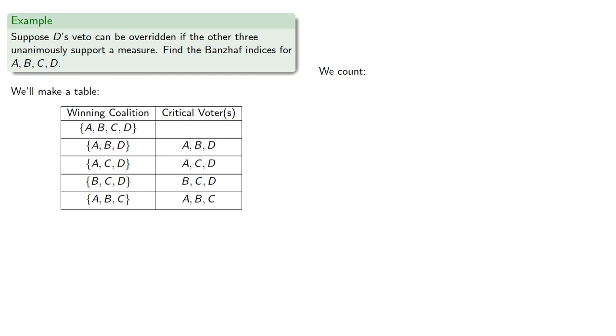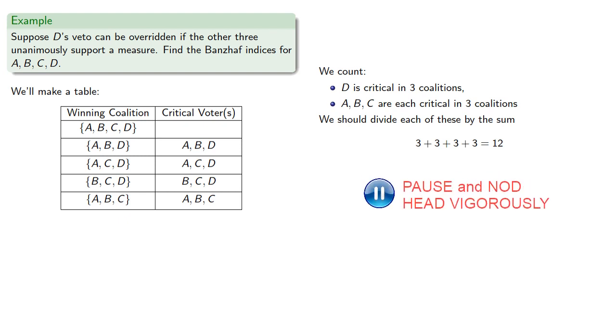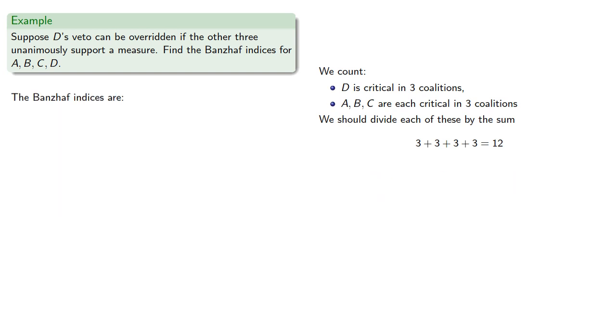And now we count. D is critical in three coalitions. Meanwhile A, B, and C are each critical in three coalitions. So we should divide each of these by the sum, 3 plus 3 plus 3 plus 3.